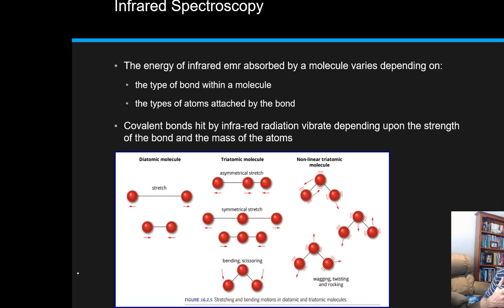As far as the infrared region of the electromagnetic spectrum is concerned, the absorbance is affected by the type of bonds that occur within a molecule and the types of atoms that are attached to that bond or by the bond. Covalent bonds that are hit by infrared radiation vibrate depending on the strength of the bond and the mass of the atoms.